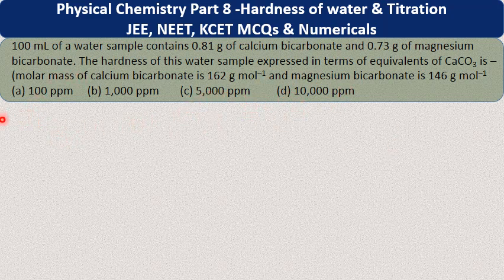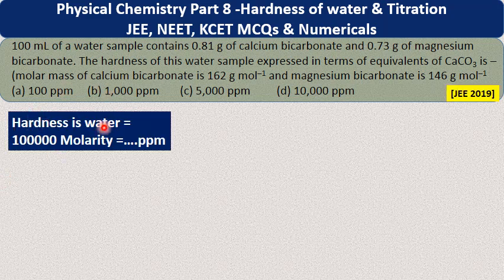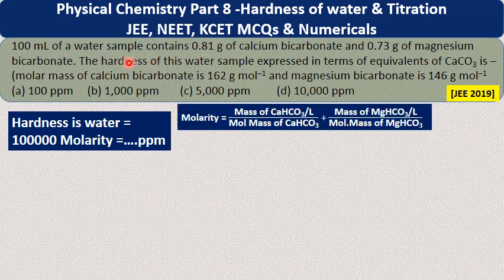Use the same shortcut formula: hardness = 1 lakh × molarity = x ppm. Molarity is not directly given, so we calculate it. The molarity of the mixture equals the molarity of calcium bicarbonate plus the molarity of magnesium bicarbonate. Molarity of each = mass per litre ÷ molecular mass. Since the weight is given for 100 ml, the weight per litre is 10 times that value.